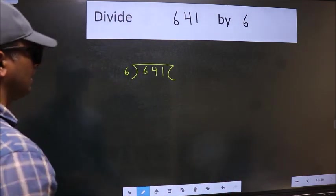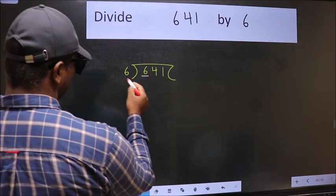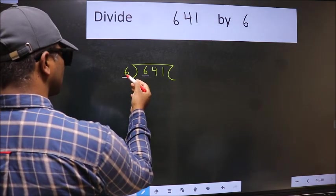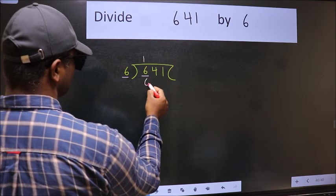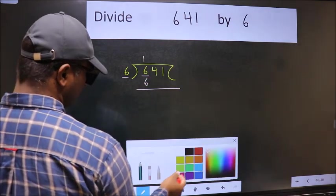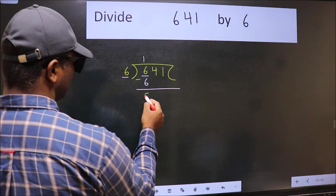Next, here we have 6 and 6 here. When do we get 6 in the 6 table? 6 once, 6. Now we should subtract. We get 0.